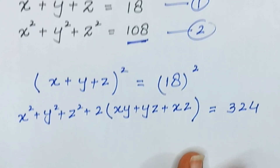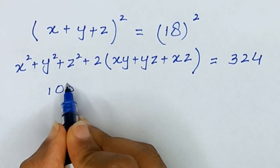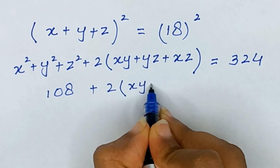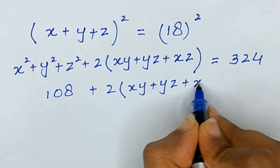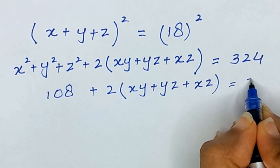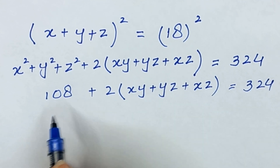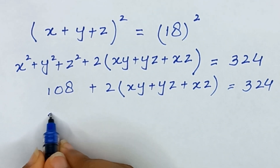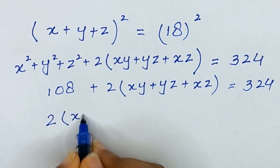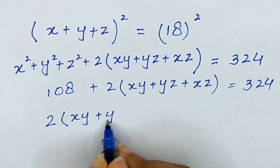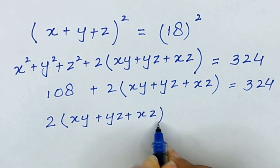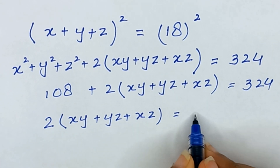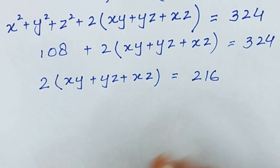It is given in equation number two that x² plus y² plus z² equals 108, so substituting: 108 plus 2 times (xy plus yz plus xz) equals 324. Taking 108 to the right-hand side, we get 2 times (xy plus yz plus xz) equals 324 minus 108, which equals 216.